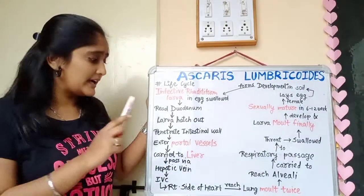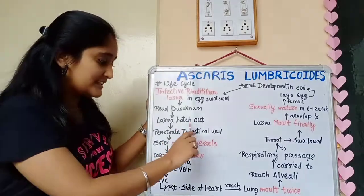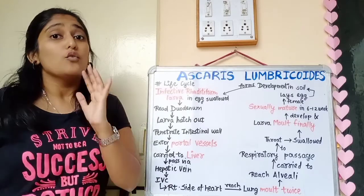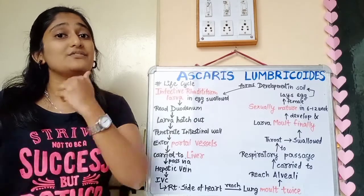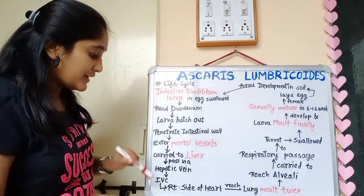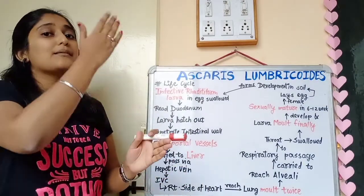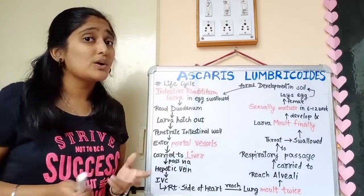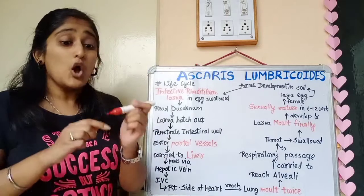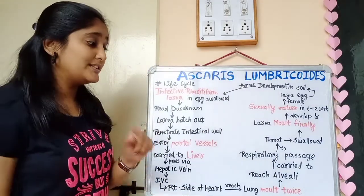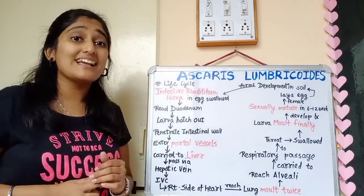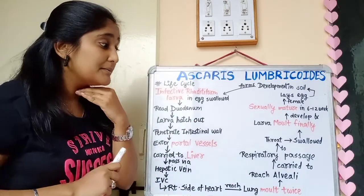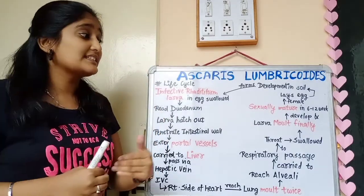The larva hatched out penetrates the intestinal wall, then enters the portal vessels and travels to the liver. From the liver, it passes through the inferior vena cava to the right side of the heart — right atrium and right ventricle — and then travels to the lungs via the pulmonary circulation.